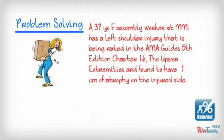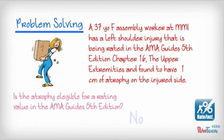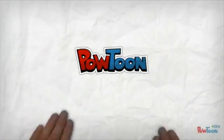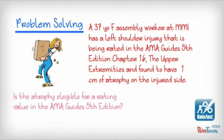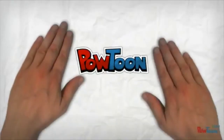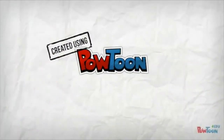Here is a problem-solving case we're going to look at. This is a case of a 37-year-old female. She's at MMI. She has a left shoulder injury that's being rated in the AMA guides, and it's being rated in chapter 16. On the physical exam, the upper extremity is found to have a one centimeter atrophic change on the injured side. So the question is: is the atrophy eligible for rating in the AMA guides fifth edition? If you recall that previous slide, the answer is no. Why? Because atrophy is only rateable in the AMA guides in chapter 15, the spine, and chapter 17, the lower extremities.